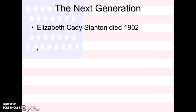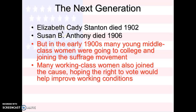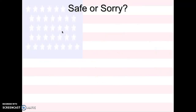So the next generation — these are the people you need to know. Elizabeth Cady Stanton and Susan B. Anthony die, but in the early 1900s, young middle-class women start going to college and join the suffrage movement. And many working-class women join the cause, hoping the right to vote would help improve their working conditions.